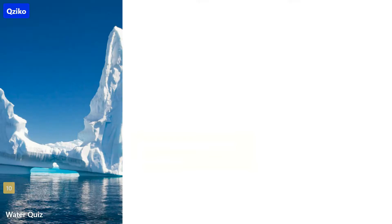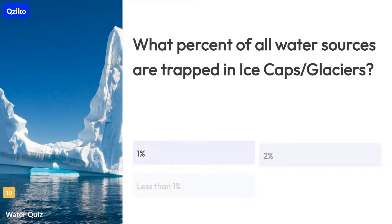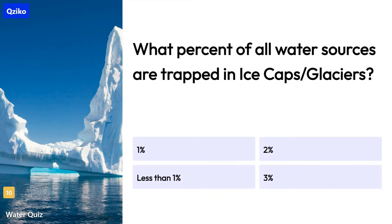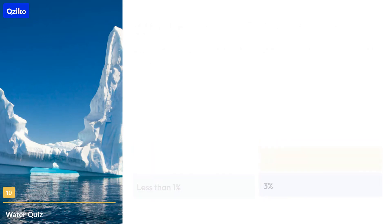Quiz number 10. What percent of all water sources are trapped in ice caps and glaciers? The right answer is 2%.